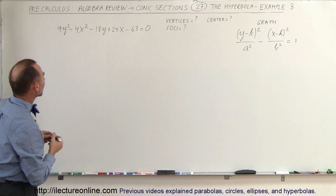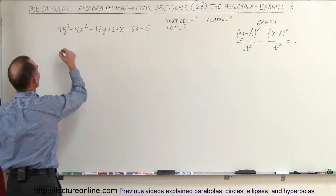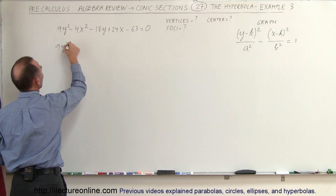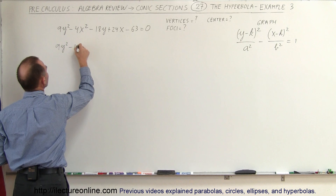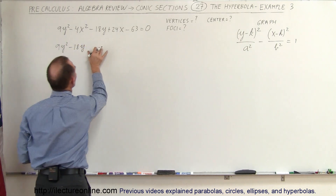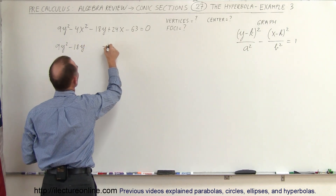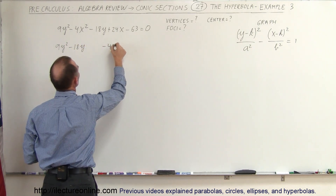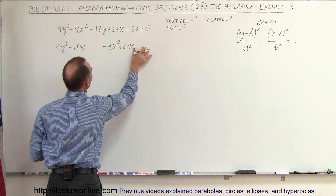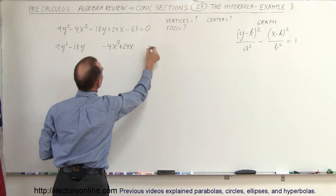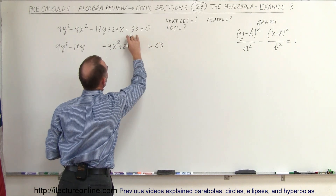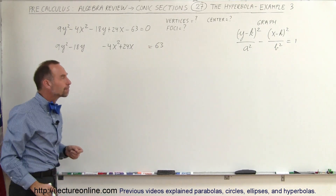We're going to separate the variables. Here we have 9y squared minus 18y — leave some space — minus 4x squared plus 24x — leave some space — equals positive 63, when we bring the 63 to the other side.